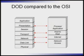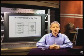Let's take a look here. We have the DOD model — the Department of Defense model — which was created before the OSI model. We have our seven layers of the OSI model, which we already know. Let's go through the four layers of the DOD model.